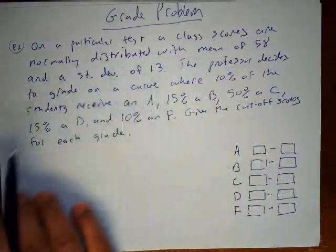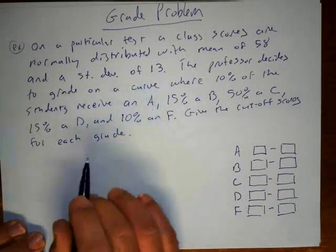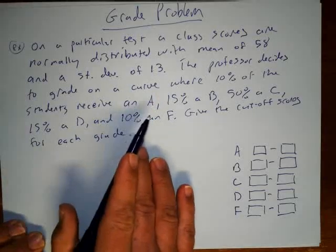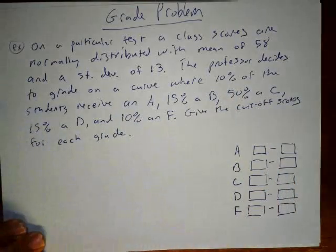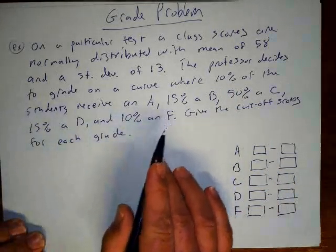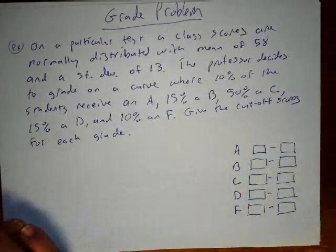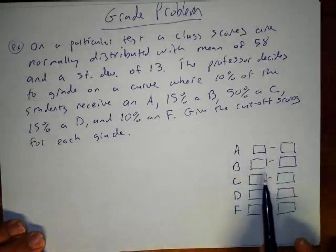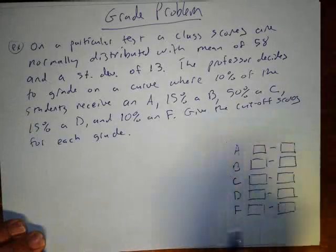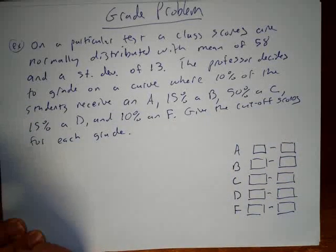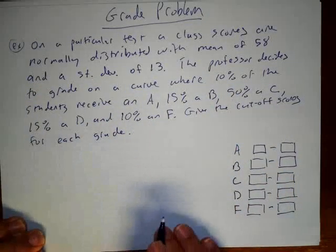On a particular test, the class scores are normally distributed with a mean of 58 and a standard deviation of 13. The professor decides to grade on a curve where 10% of students receive an A, 15% receive a B, 50% receive a C, 15% a D, and 10% an F. You need to find the cutoff scores — it's written out like that on your homework and you fill in the boxes.